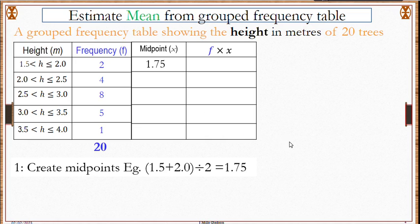So our first one is 1.75. We do this for all the rows, so these are our midpoints and they become our x values.